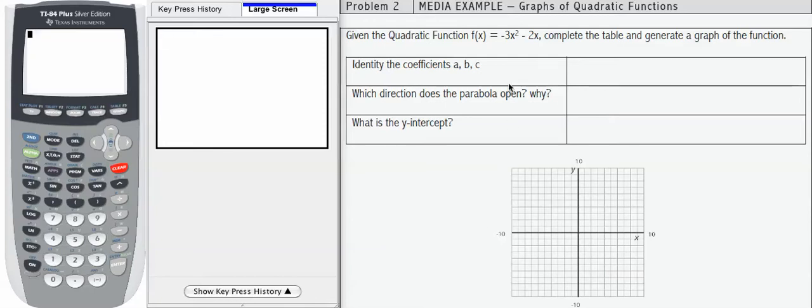In this problem, we're given a quadratic function, f of x equals negative 3x squared minus 2x, and we're asked to complete the table and generate a graph.